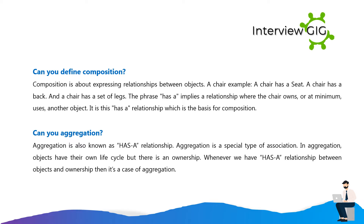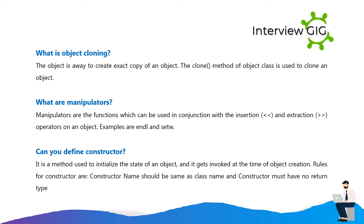Can you define aggregation? Aggregation is also known as a 'has a' relationship. Aggregation is a special type of association. In aggregation, objects have their own life cycle but there is an ownership. When we have a 'has a' relationship between objects and ownership, then it's a case of aggregation. What is object cloning? Object cloning is a way to create an exact copy of an object. The clone method of the Object class is used to clone an object.